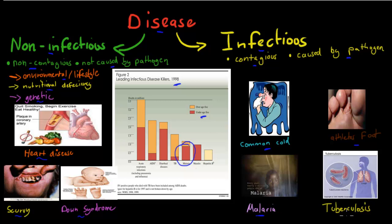We also have tuberculosis. This used to be a huge problem, but now we've developed methods to prevent it from occurring. Tuberculosis is a bacterial infection. All of these examples I mentioned are contagious and are caused by a pathogen, and therefore they fall into the category of infectious diseases.